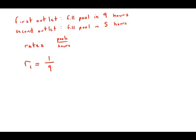The first rate is one pool in 9 hours. The second rate is one pool in 5 hours. The combined rate is going to be the sum of these two rates. Again, what you're allowed to add in a problem like this, you're allowed to add the rates.